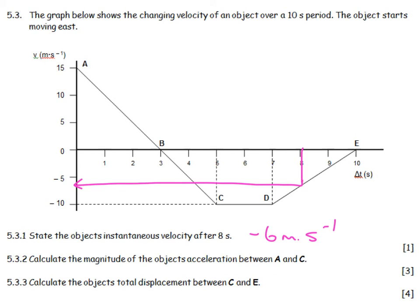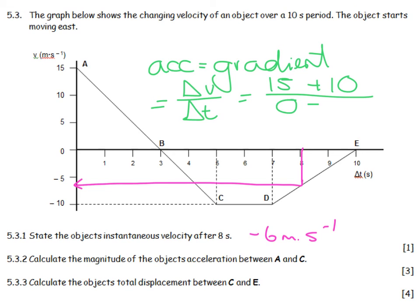Calculate the magnitude of the object's acceleration between A and C. Now please get your marks, you didn't give me much chance to give you marks here. Acceleration equals gradient. And if you make a mistake, I can give you a mark. If you just launch into the gradient, change in V over change in time, is equal to 15 minus minus 10, which is plus 10, divided by 0 minus 5. And then I rearrange that, and I land up with minus 5 metres per second squared. But it only wants the magnitude, so I don't care about the negative sign, and I don't give a direction.